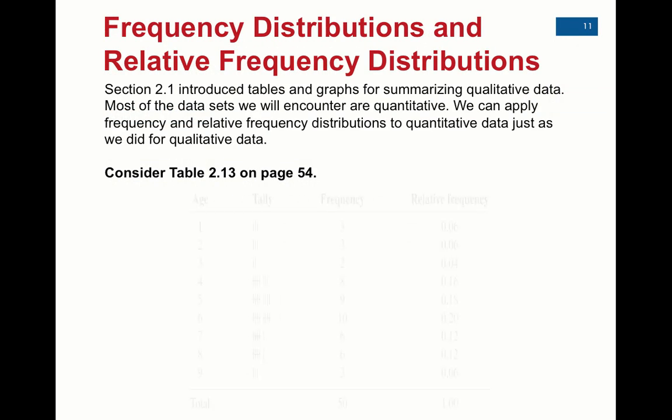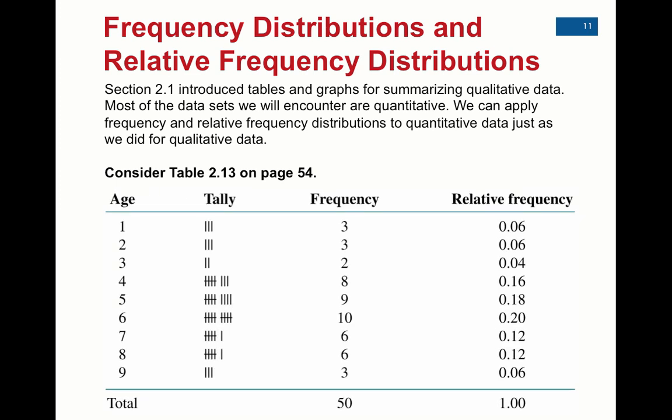Frequency distributions and relative frequency distributions. We've done this before. This first example is a discrete data set of ages. So you can imagine maybe we go to a summer camp or a Halloween party with a bunch of children and we record all the children's age. So as we go through we realize that we have children age 1 to 9. We tally as we go through and come up with a frequency and thus a relative frequency for each age.